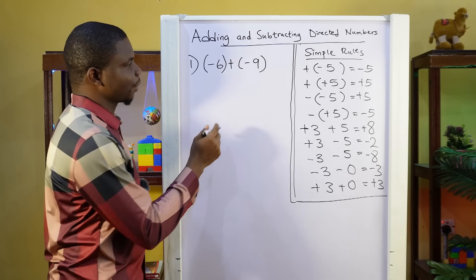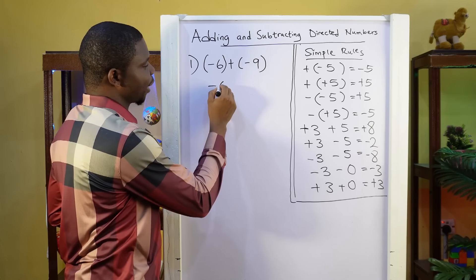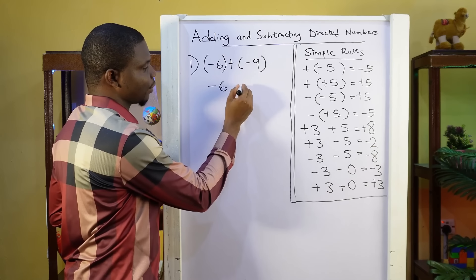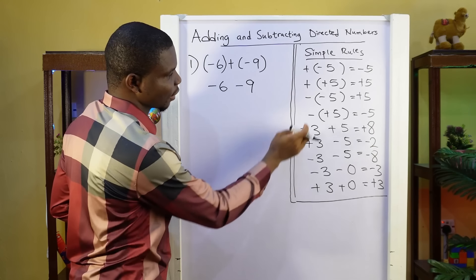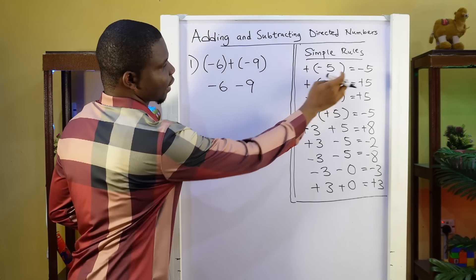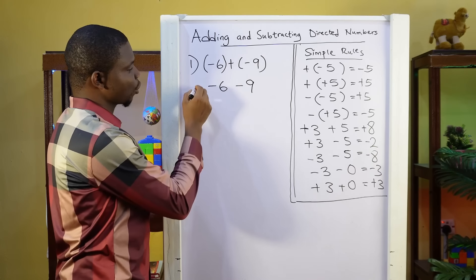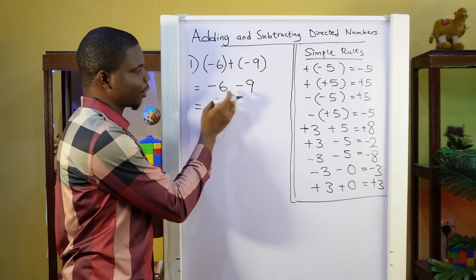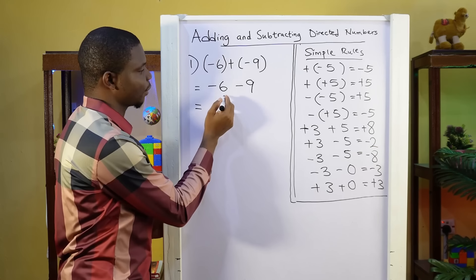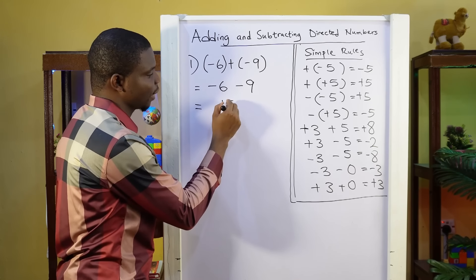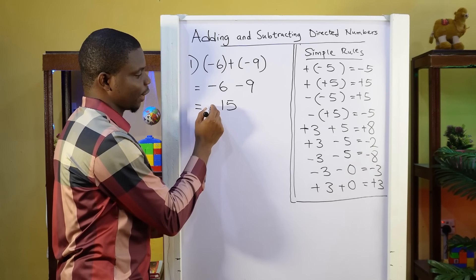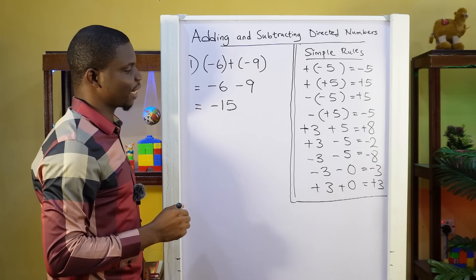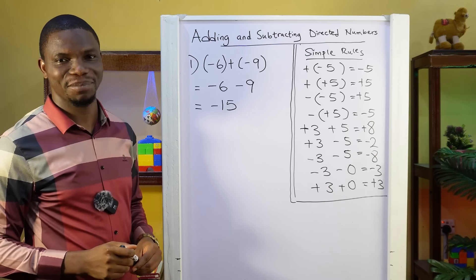So with Question 1, we'll first open the bracket. Minus 6 — if you have positive outside the bracket, the sign inside remains the same. So we have minus 6 minus 9. Now when you have minus minus, you simply add the numbers: 6 plus 9 is 15. And then it takes a negative sign because this is minus minus. So our answer is minus 15.